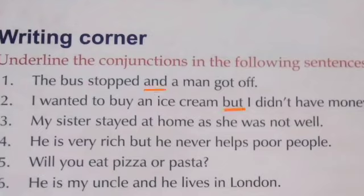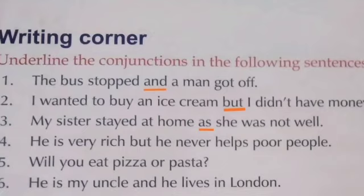Very good. Third sentence: My sister stayed at home as she was not well. The word used to join these two statements is 'as' — underline it. Fourth question: He is very rich, but he never helps poor people. The conjunction used here is 'but' — underline the word 'but.'